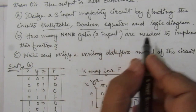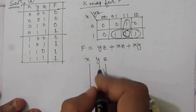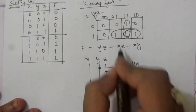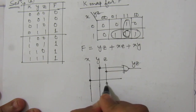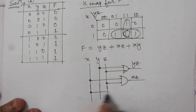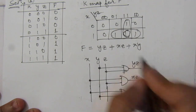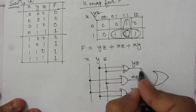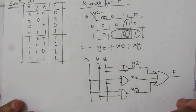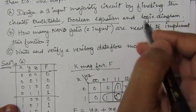We have found the truth table and Boolean equation. Now we draw the logic diagram. With inputs X, Y, and Z: first an AND gate for Y and Z giving output YZ; then an AND gate for X and Z giving XZ; then an AND gate for X and Y giving XY. These three terms are then fed into an OR gate to produce the output function F. This completes the majority circuit — the first part is done.